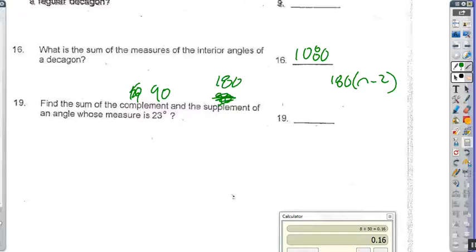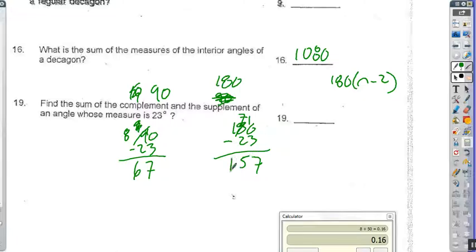So we do 90 minus 23. That's what happens when you go too fast. Now I'm embarrassed. So that's 8, it's like 6. So we have 67. So 180 minus 23, 7, 5, 1. Let's add them together. So 224.